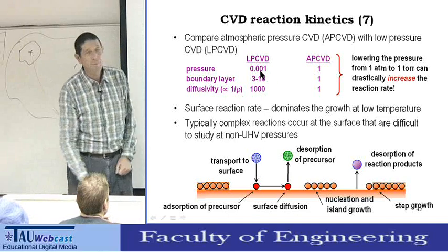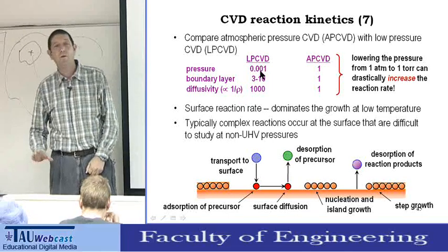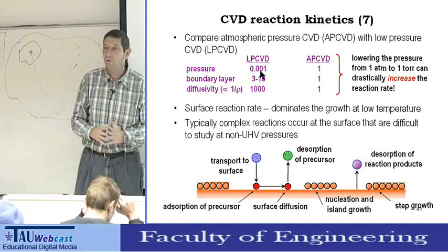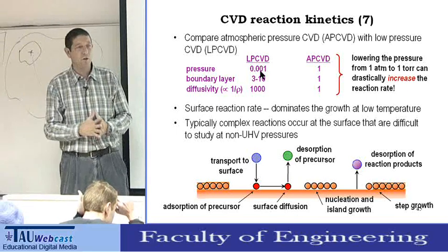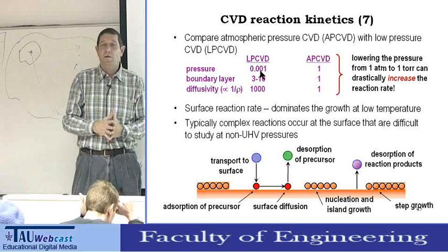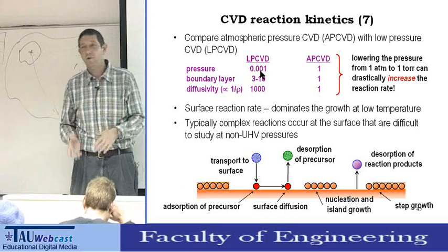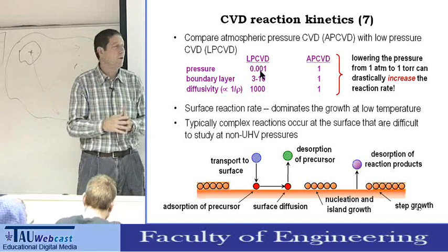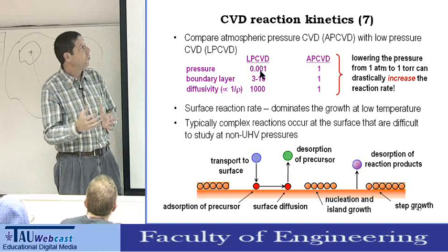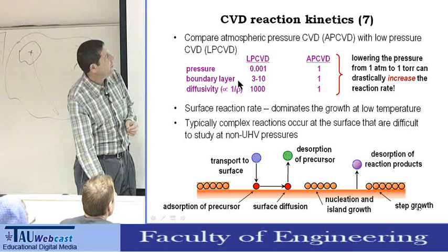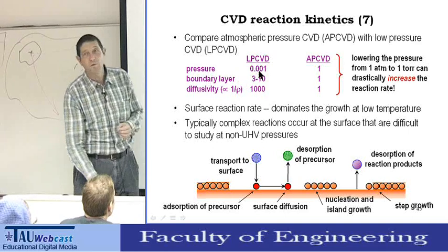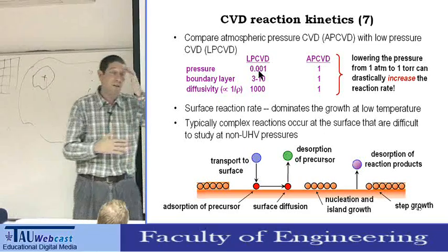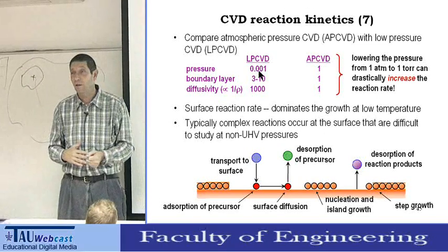Low-pressure CVD has a typical value of about one thousandth of an atmosphere, in the range of one millitorr. Typical processes in low-pressure CVD are about 0.1 to 1 millitorr, up to one torr. In some cases we can make it even one hundredth or one thousandth of this value.